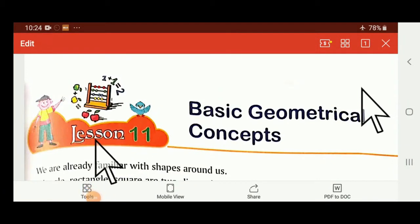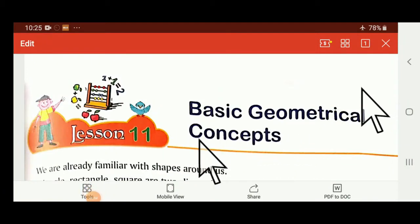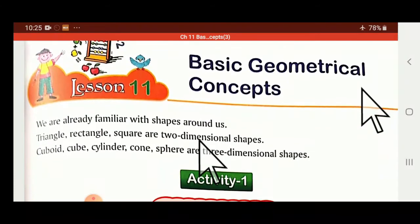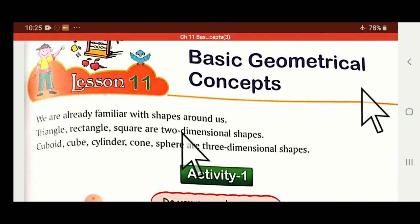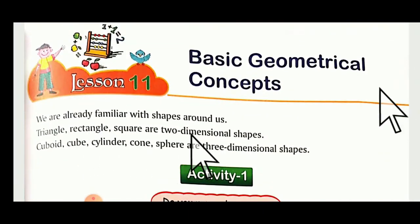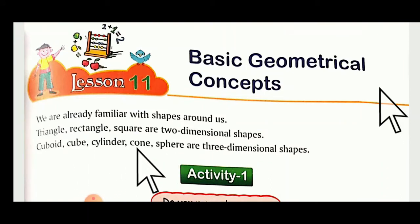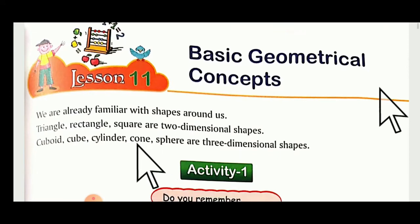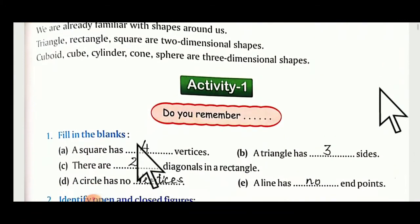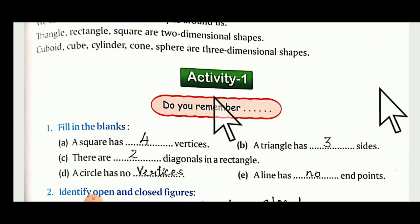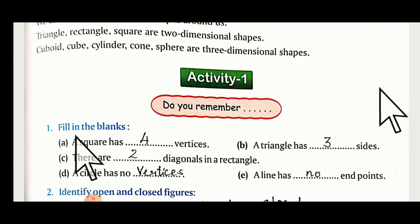Hello children, today we are going to begin lesson number 12, that is basic geometrical concepts. We have studied till here triangles, rectangles, squares — two dimensional shapes — then cuboid, cube, cylinder, cone, sphere in three dimensional space. This is activity one, all about from third standard.